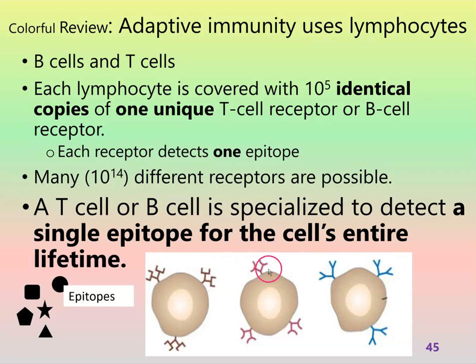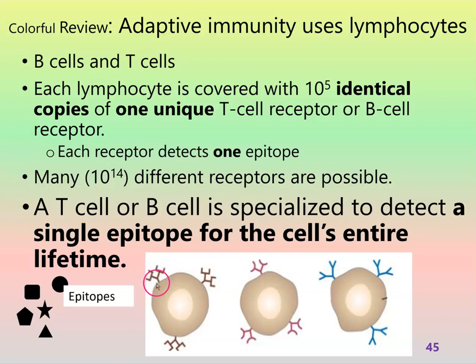These, as drawn here, are B cell receptors — B as in Bravo cell receptors. T cell receptors we would draw differently. B cell receptors are actually a type of immunoglobulin or a type of antibody, but that's not that important a thing to remember. That's just why we draw them this way. You could think of them as a little mini antibody that acts as a receptor.